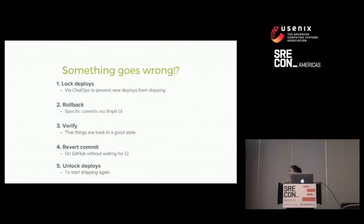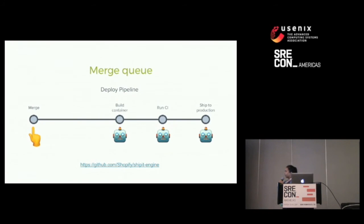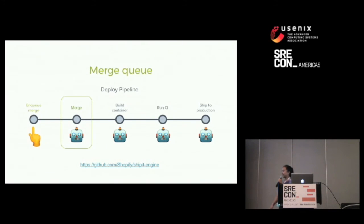One issue with this setup is that when deploys are locked, that's great for engineers solving an issue, but it really sucks for everyone else who's just trying to commit their code, since when deploys are locked you can't add your commits into master yet. So we innovated again and added a merge queue. A merge queue allows you to enqueue your merge instead of clicking to merge directly into master, and when the pipeline is ready, ShipIt will merge your commit into master. We also have a timeout — if your commit is in the merge queue for more than 20 minutes before being merged, you get a message from Spy asking you to confirm that you're still around.